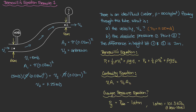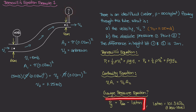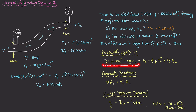For part B, we need the absolute pressure at point 2. We only have gauge pressure at point 1, and the gauge pressure at point 2 is unknown. A good approach is to first find the gauge pressure at point 2 using Bernoulli's equation — drawing a streamline from point 1 to point 2 — and then convert that gauge pressure to absolute pressure using our equation.